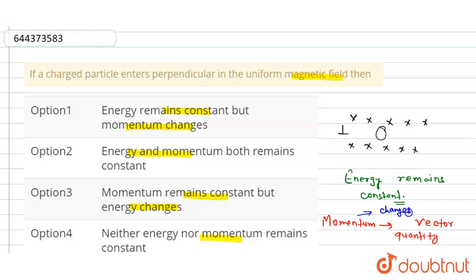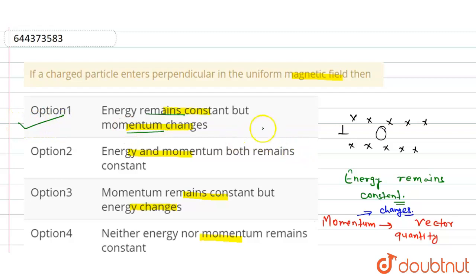So checking the options, this matches option one: energy remains constant but momentum changes. So the correct option is option one. I hope you understood, thank you.